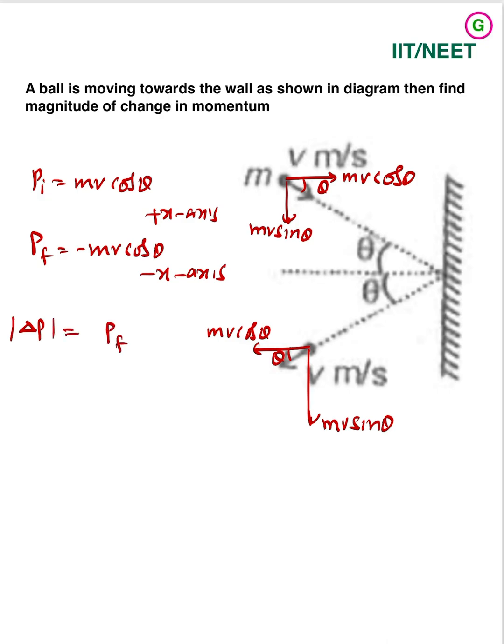So now delta p, magnitude of change in momentum, p final minus p initial. Minus mv cos theta minus mv cos theta, that will be minus 2 mv cos theta.